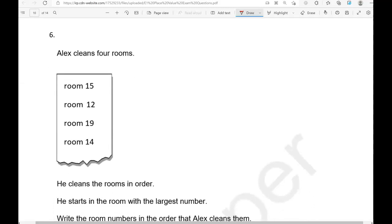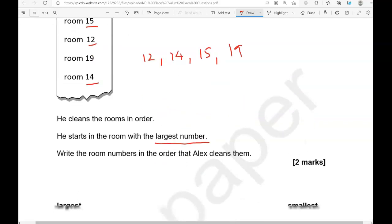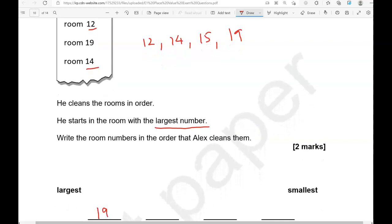Alex cleans four rooms: room 15, room 12, room 19, and room 14. He cleans the rooms in order. He starts in the room with the largest number. Write the room numbers in the order that Alex cleans them. Looking at the room numbers again, they are all above 10. So after 10, we'll have 11 which isn't here, then we have 12, then 13, 14, 15, 16, 17, 18, 19. So if we're going to write them starting with the largest, we're going to put 19 first, then 15, then 14, then 12.